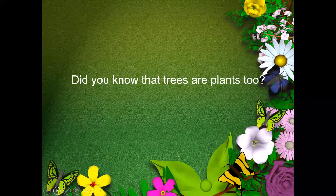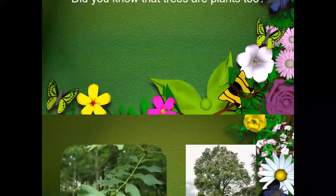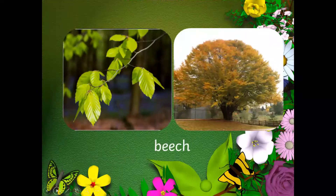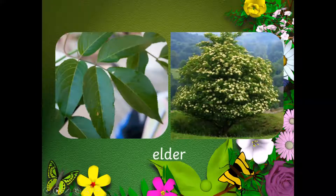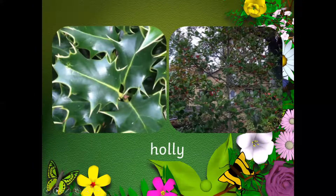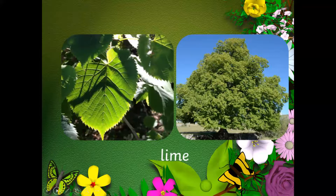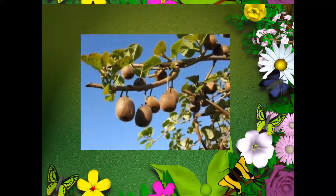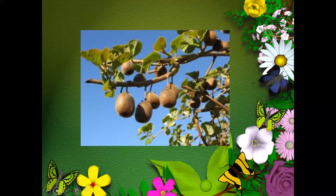Did you know that trees are plants too? Let's try to find out and see if you can recognize any of the trees in the pictures. Do you know this tree? Have you ever seen it around? It's called ash. There's a beech tree. It's an elder tree. Here's a holly tree. That's a lime tree. This is an oak tree. Have you ever seen any of these trees around? Have you seen any of these trees in the park? Which trees do you see in your local park? Do you recognize this one? It's a yew tree.